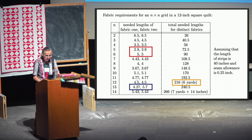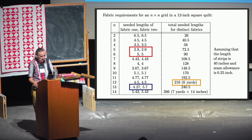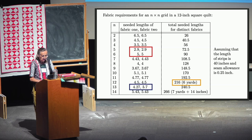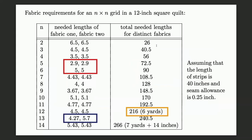The numbers keep going down for a while, then jump again, then go down again. For the 13×13 grid you need one more piece of one color than the other, which requires one additional strip. If you use all distinct fabrics, you have to buy outrageous amounts of fabric just to fill a 12×12-inch square quilt.